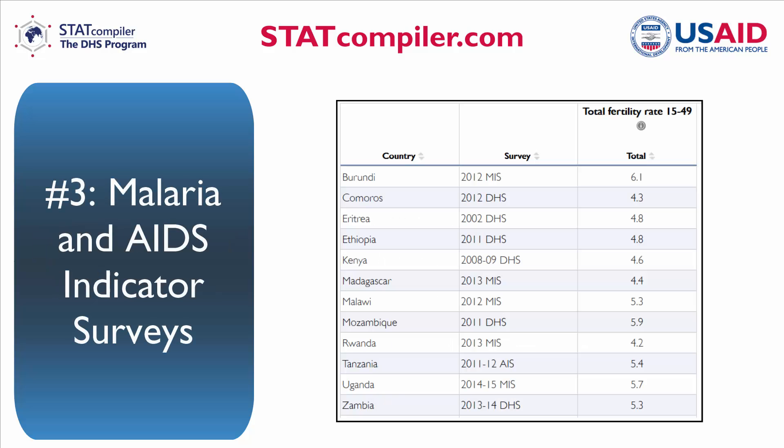Number 3. We've also added data from malaria indicator surveys and AIDS indicator surveys to the STATcompiler database.